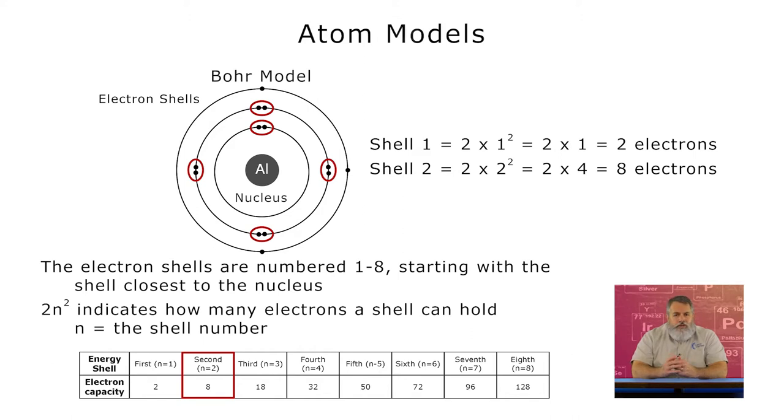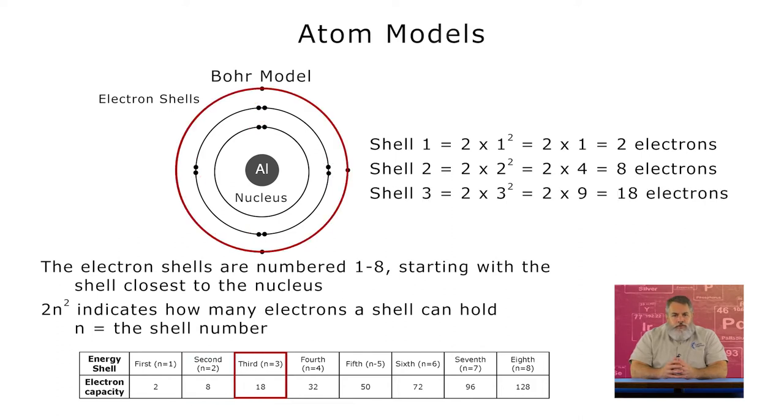Now, again, I'll only expect you to draw the Bohr model for atoms that have electrons that go into the first three shells. Since the third shell can hold 3 squared is 9 times 2 is 18 electrons, that means that, unless I give you specific instructions on how to do it, I'll only expect you to draw Bohr models for atoms with less than 2 plus 8 plus 18, or 28 electrons.